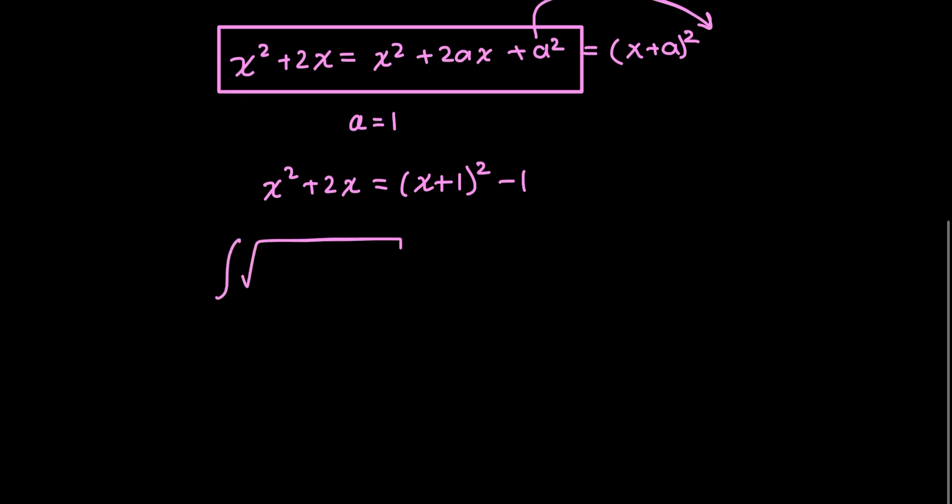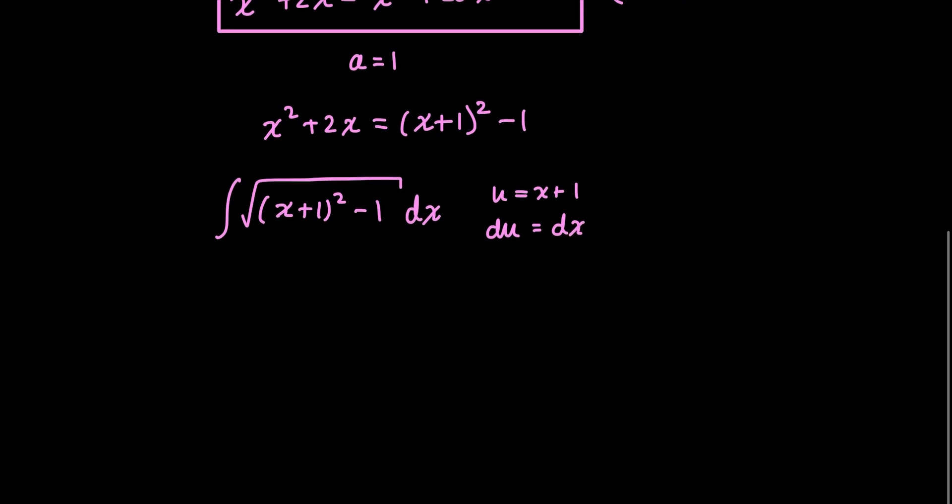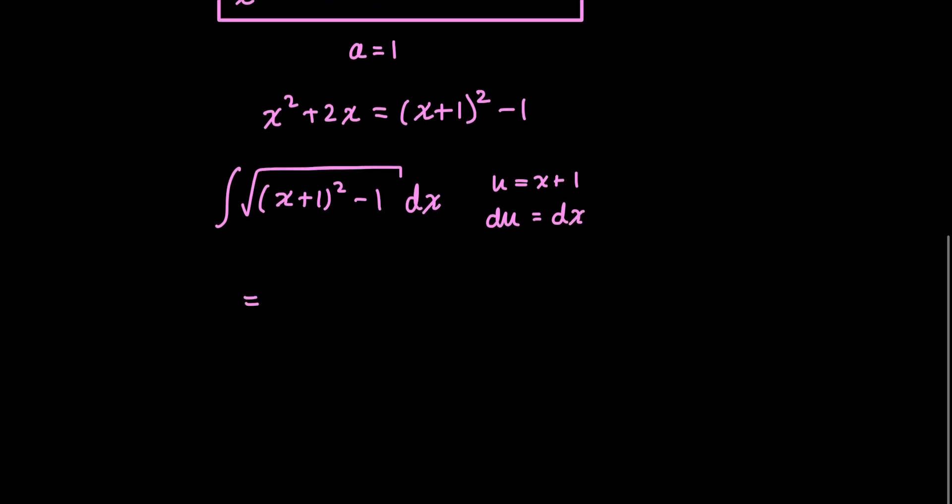So, now I have the integral of the square root of x plus 1 squared minus 1 dx. And now, things are starting to look a little more familiar, but it might not be that obvious yet. So, let's do a u substitution. Let's say u is equal to x plus 1 and du is equal to dx. So, rewriting my integral again, I get that the integral is the square root of u squared minus 1 du. Now, I can see a familiar form.